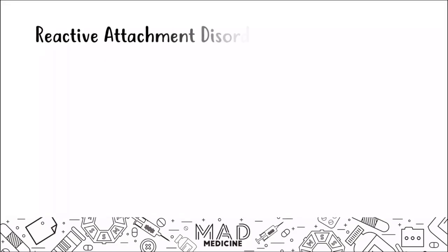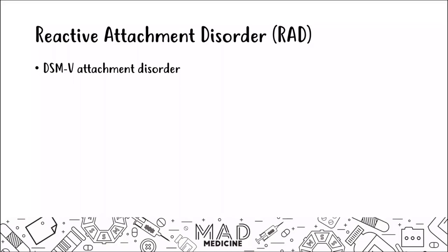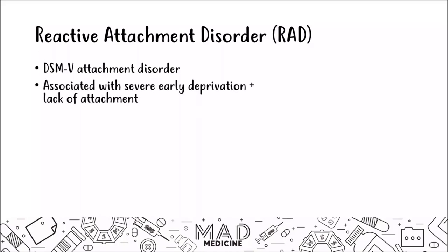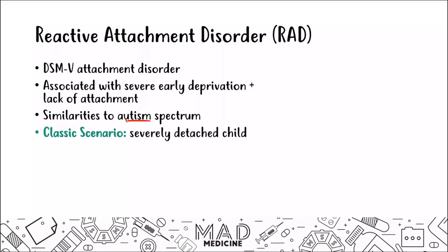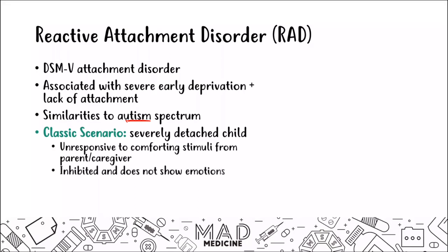The first attachment disorder is Reactive Attachment Disorder, or RAD. This is a DSM-5 attachment disorder associated with severe early deprivation and lack of attachment. It has similarities to the autism spectrum. The classic scenario is a severely detached child who does not want to talk to people, is unresponsive to comforting stimuli from a parent or caregiver, is inhibited, does not show emotions, is withdrawn, and avoids people — all because they never had attachment early on.